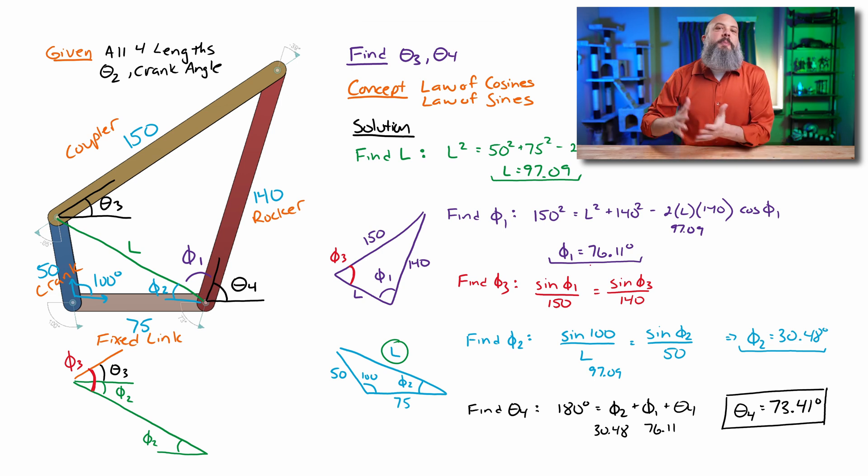So since I already know a whole bunch about the big triangle, I can solve for phi 3 using law of sines, where I'm saying now that phi 1, which I've already solved for, is the opposite of 150, and phi 3, which I'm trying to find, is opposite of the 140. And so I can multiply this out and get to phi 3 of 64.96 degrees.